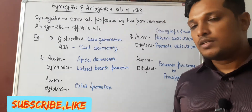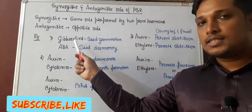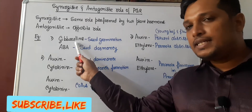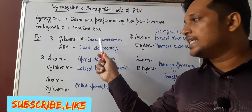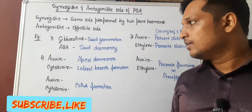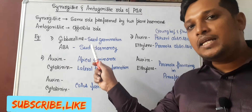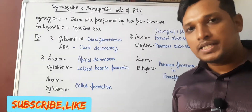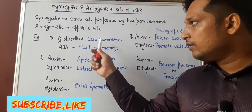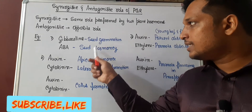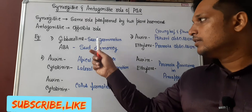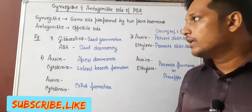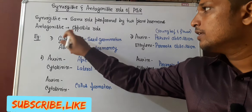A commonly asked question is on gibberellins and abscisic acid. Gibberellins are the hormone which will promote seed germination. Abscisic acid will inhibit seed germination — it is responsible for keeping the seed in a dormant condition. If you consider seed germination as a function, both these hormones play an opposite role.